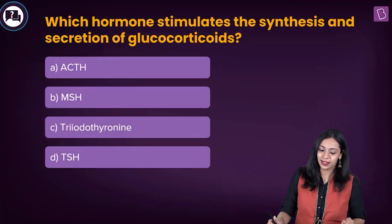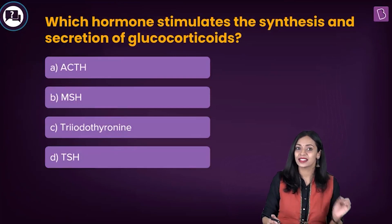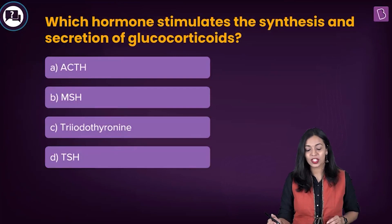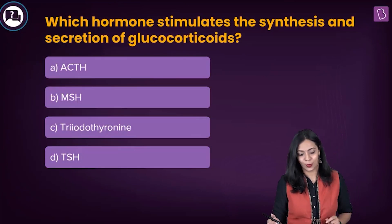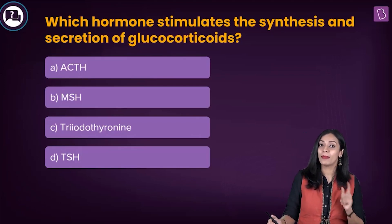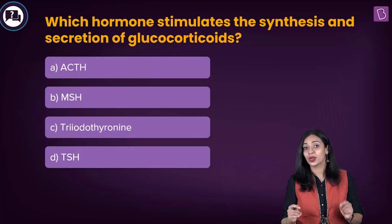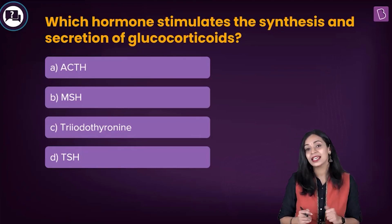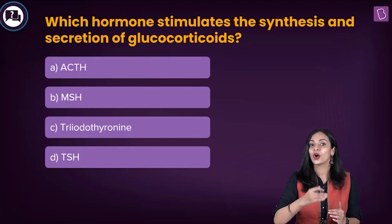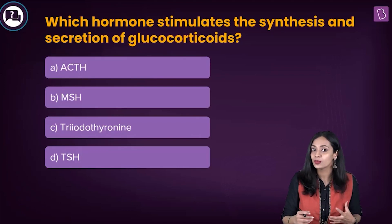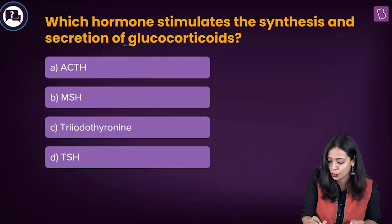Let's take a look at the question: which hormone stimulates the synthesis and secretion of glucocorticoids? The options are ACTH, which stands for adrenocorticotrophic hormone; option B, MSH, which stands for melanocyte stimulating hormone; option C, triiodothyronine, also known as T3 hormone; and TSH, which stands for thyroid stimulating hormone. We have to find out which hormone is involved in stimulating the synthesis as well as secretion of glucocorticoids.